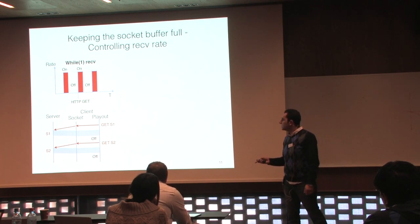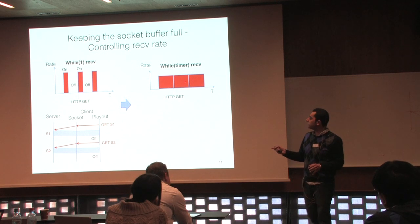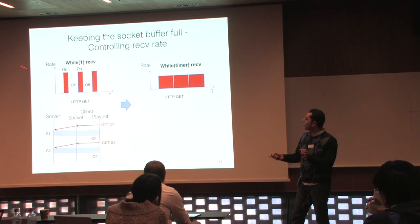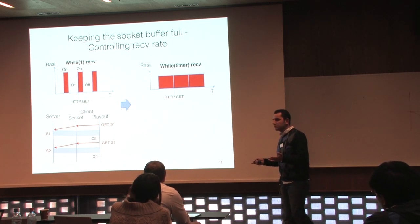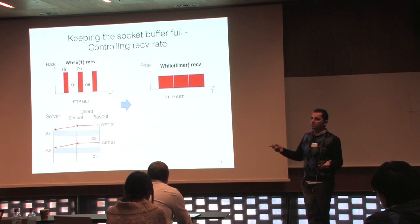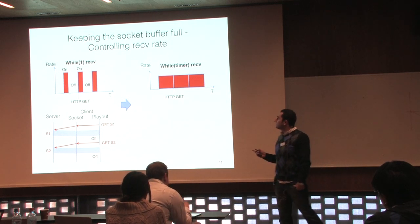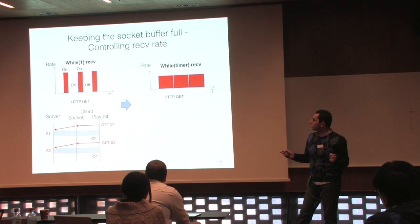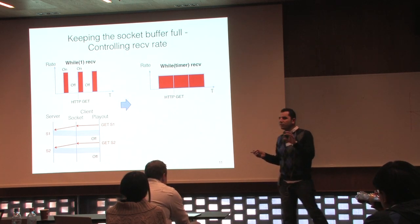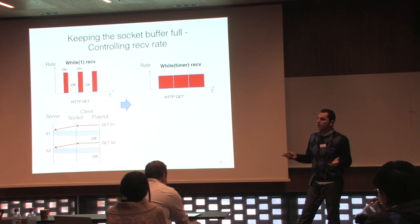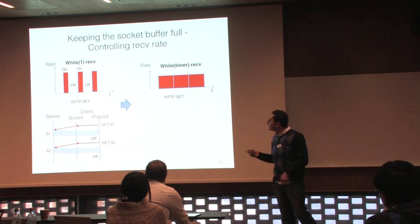We can control the receive rate so a segment is received without any off periods. For example, if a video bitrate is 4 Mbps, just receive it at 4 Mbps — no off periods. But there's a problem: a typical DASH player uses the download rate to estimate available bandwidth. If we enforce receiving at 4 Mbps, we're forcing the bandwidth estimate to be 4 Mbps. How do we overcome this?